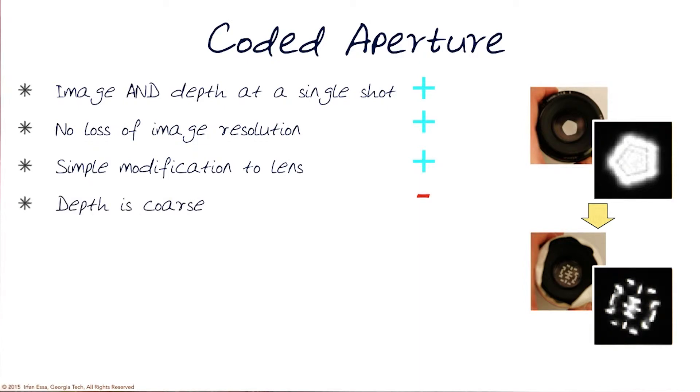Depth is, of course, coarse, and we saw examples of that. We're trying to get something out of nothing. You get a little bit of depth, but not very much. That is because we're creating focus planes by changing how the focus looks differently because of the coded aperture.